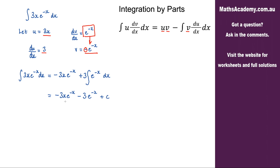Now if you want to do a little bit of factoring here you could. We could factor out the negative 3 and the e to the minus x, and that would leave us with x plus 1, and just add on that constant of integration.